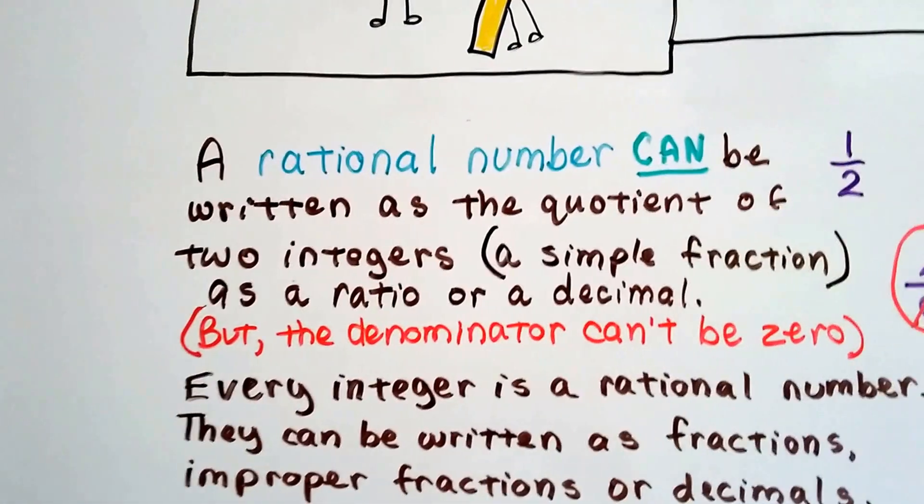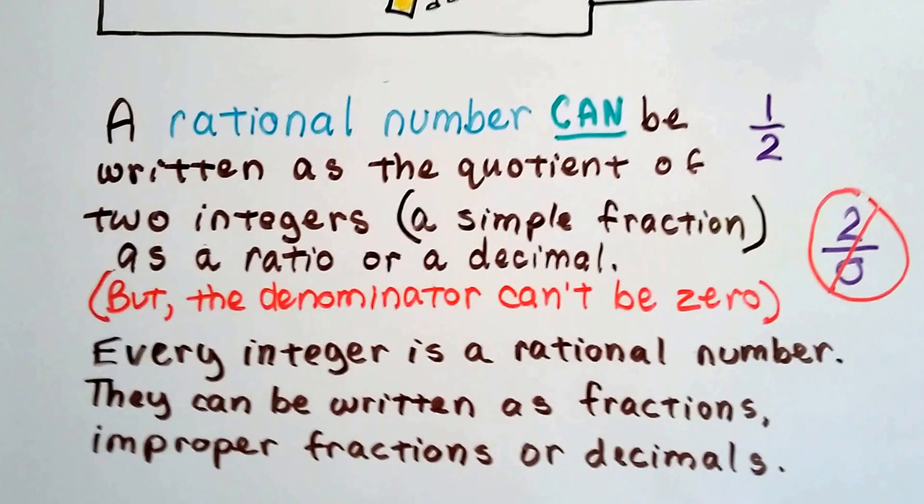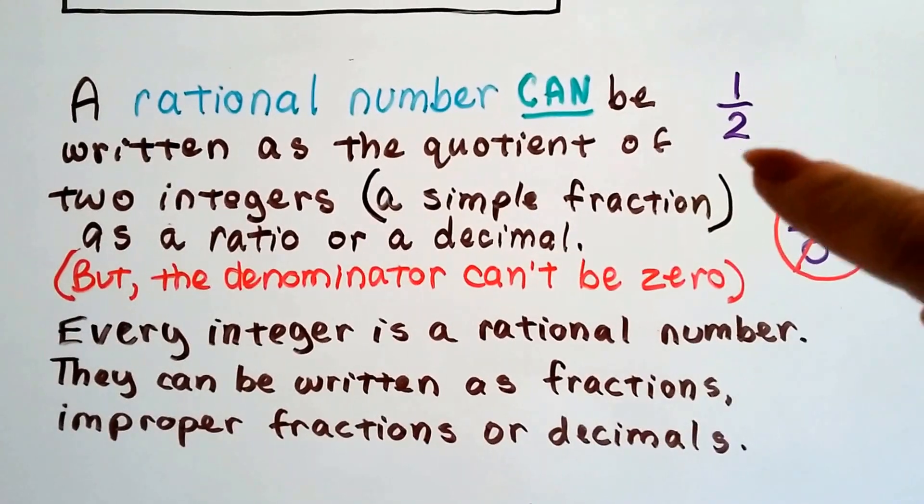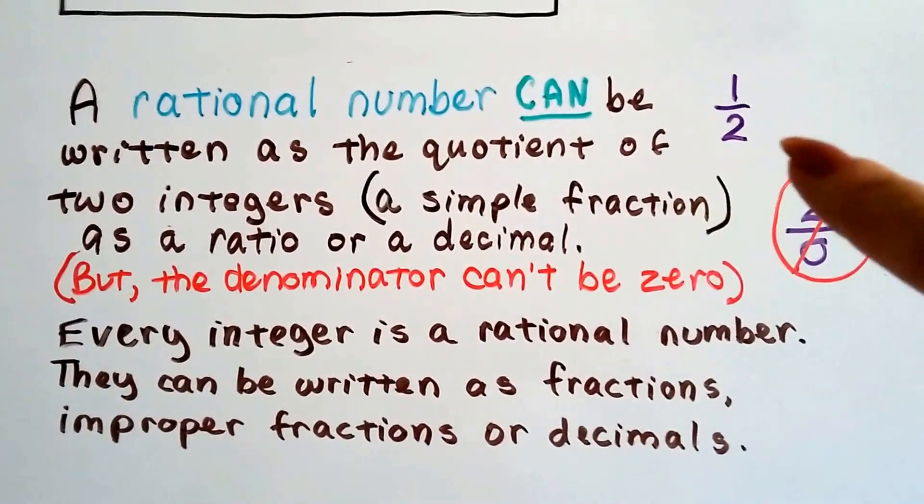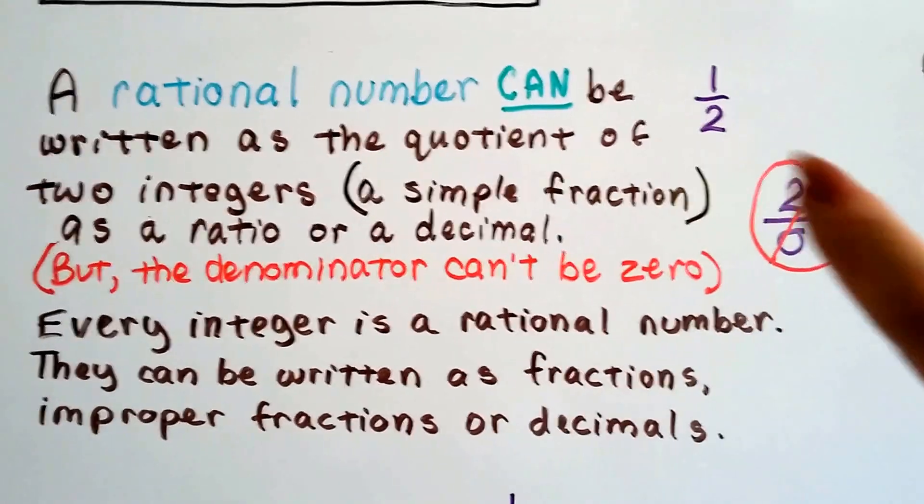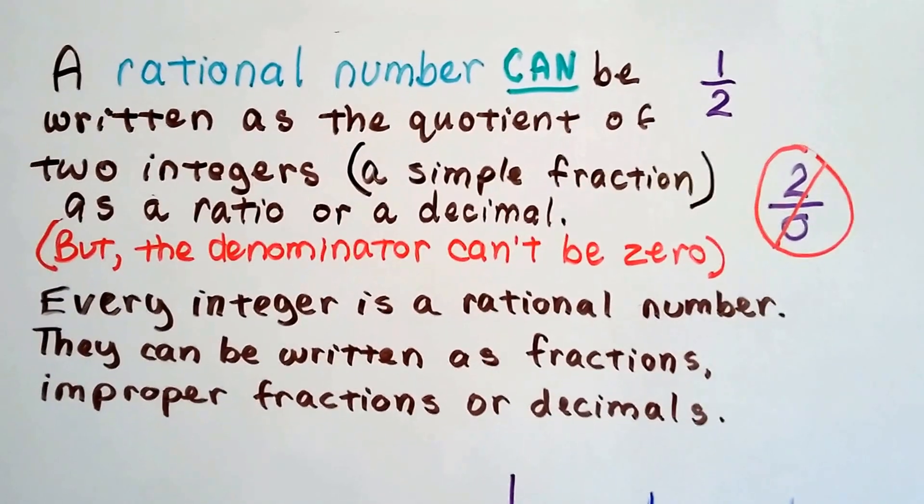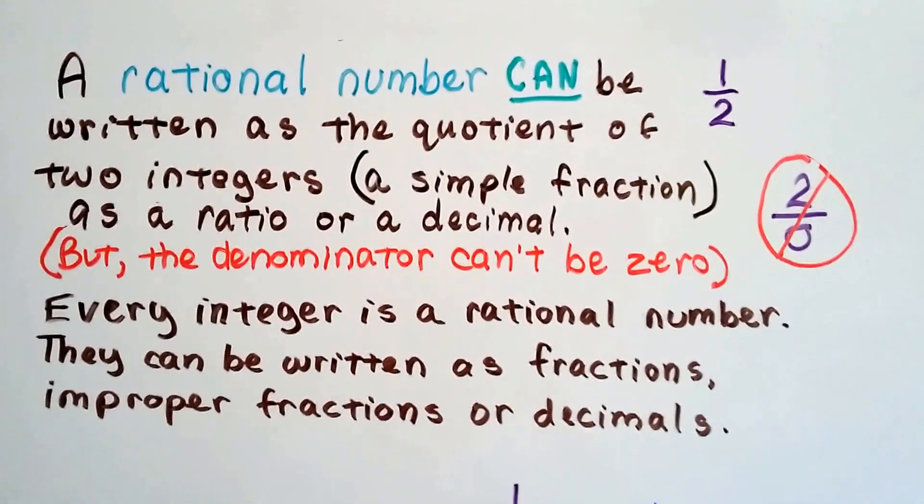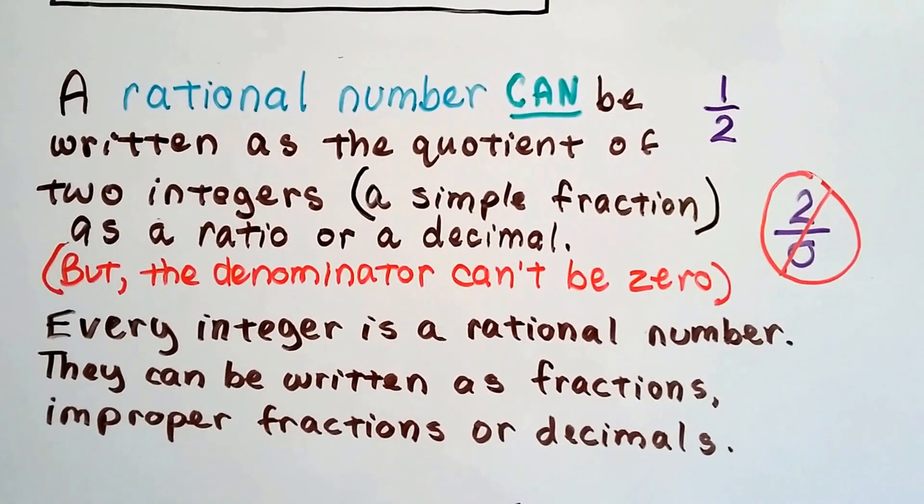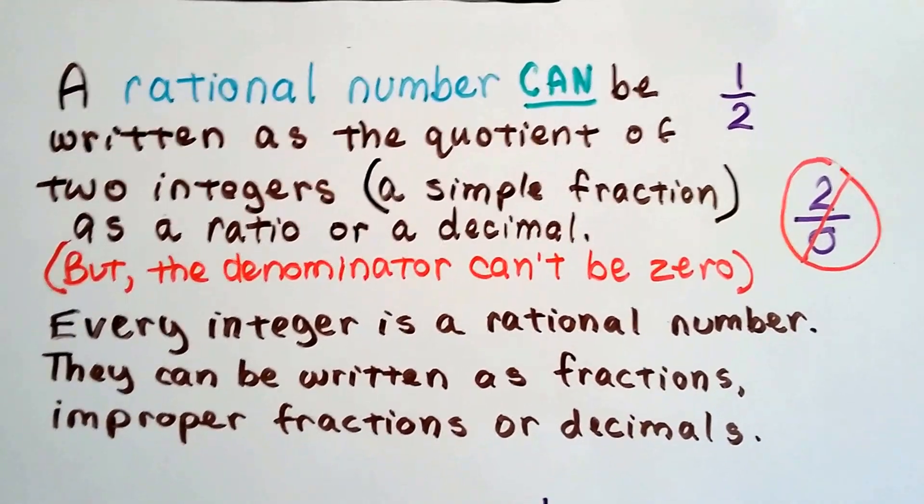Okay, so remember, a rational number can be written as the quotient of two integers. It can be written like a simple fraction, as a ratio, or as a decimal. But the denominator can't be zero. They can be written as fractions, improper fractions, or decimals, and every integer is a rational number.